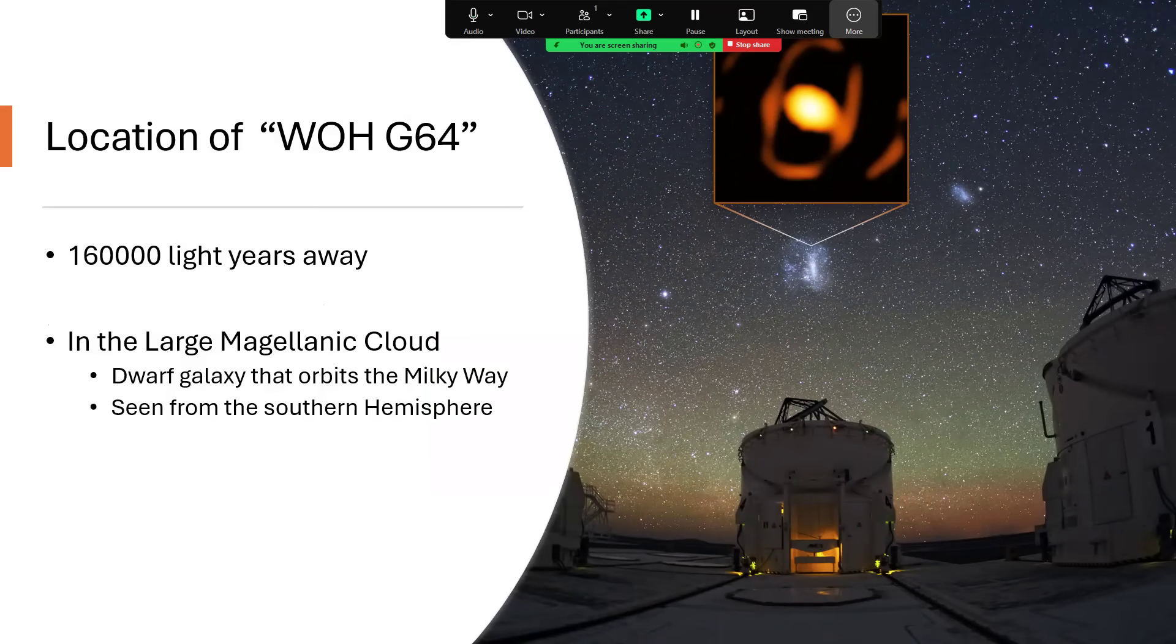So this star, 160,000 light years away from us in the large Magellanic Cloud, the dwarf galaxy that orbits around the Milky Way, visible from the southern hemisphere. There's this marvelous photograph here. You can see dead center, the large Magellanic Cloud, and up to its right, its smaller, more distant cousin.